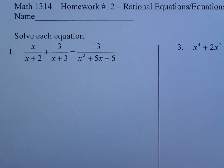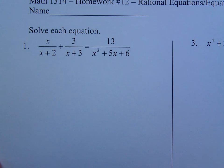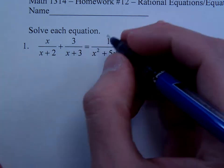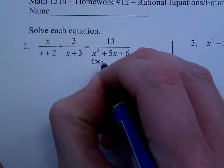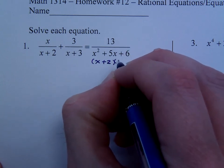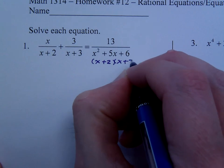In this first one, you see that you have a bunch of x's in these denominators, so we've got to clear out those denominators. It's all about finding the LCD, and the LCD is all about factors. x squared plus 5x plus 6 factors as x plus 2, x plus 3.